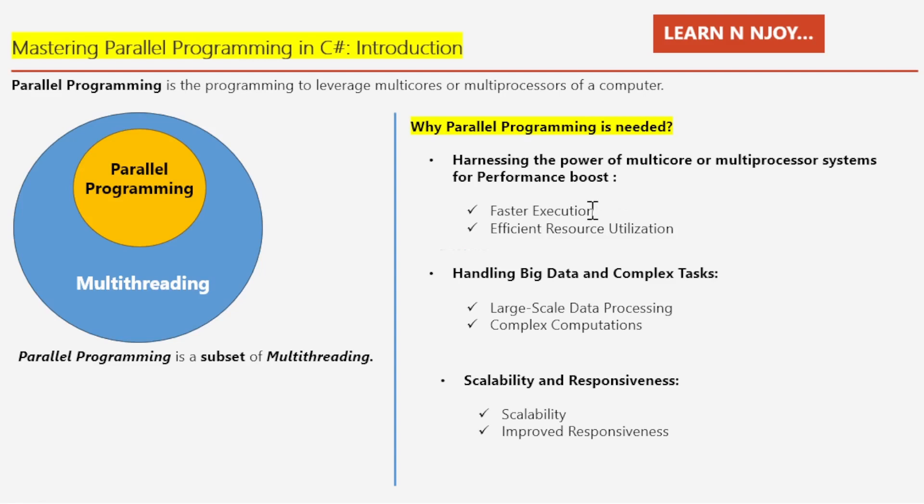Faster Execution — who doesn't love speed? Parallel Programming allows for faster execution by spreading tasks across multiple cores, effectively getting more done in less time. Efficient Resource Utilization — it's about using your resources smartly. Parallel Programming ensures your system's potential isn't wasted, maximizing the use of those precious cores.